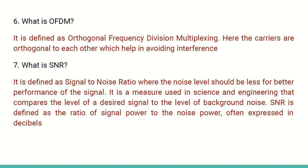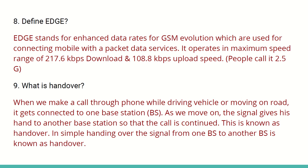SNR is the ratio of the signal power to the noise power, and most of the time it is expressed in dB, that is decibels. Define EDGE: EDGE stands for Enhanced Data Rates for GSM Evolution. This is mostly considered 2G but it is actually 2.5G and 2.75G. It is used for packet data services.